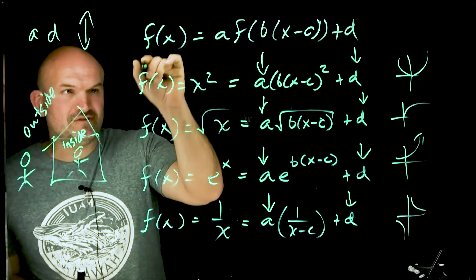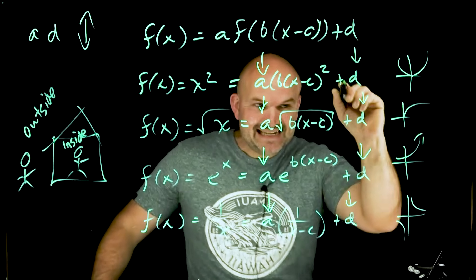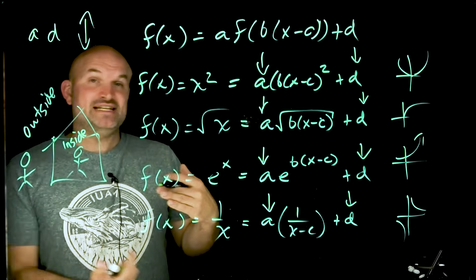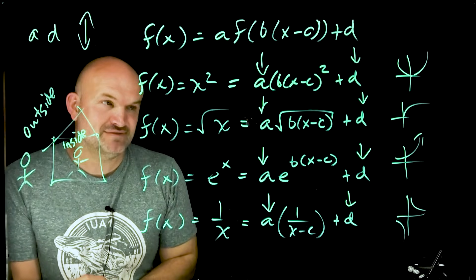That is what A is going to do. It doesn't matter if it's this one, this one, this one, or this one, or any other function that you have to do. D is always going to be shifting the graph up or down. If D is positive, you're going to shift it up. If D is negative, you're going to go ahead and shift it down.